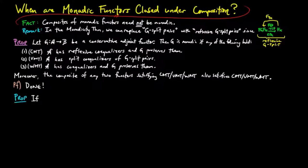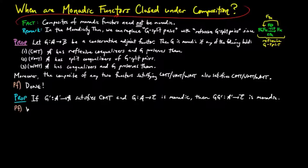Next, we show if a functor g' satisfies CMT and g is monadic, then g, g' is also monadic. For the proof, we use the monadicity theorem and show 1, g, g' is adjoint,